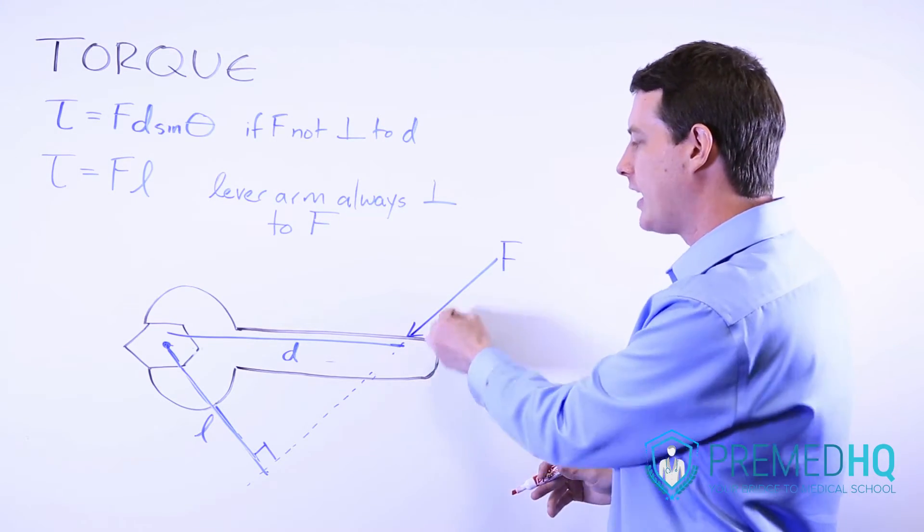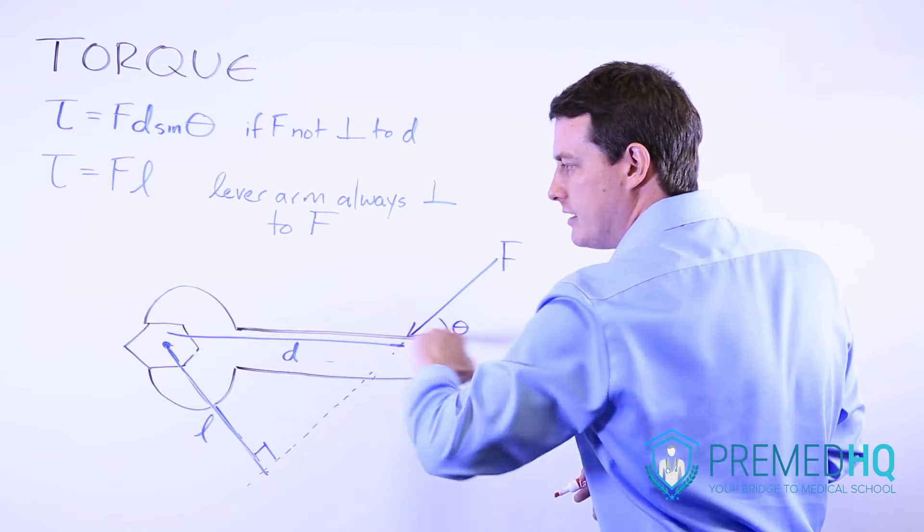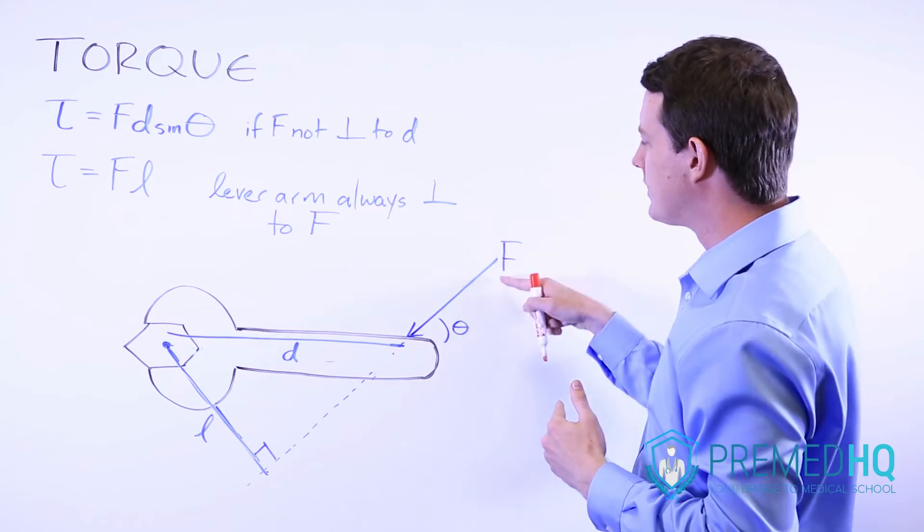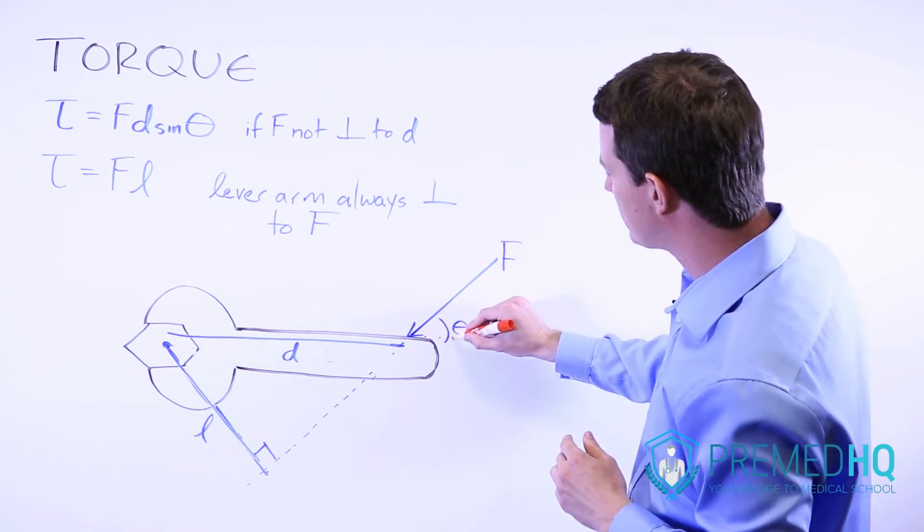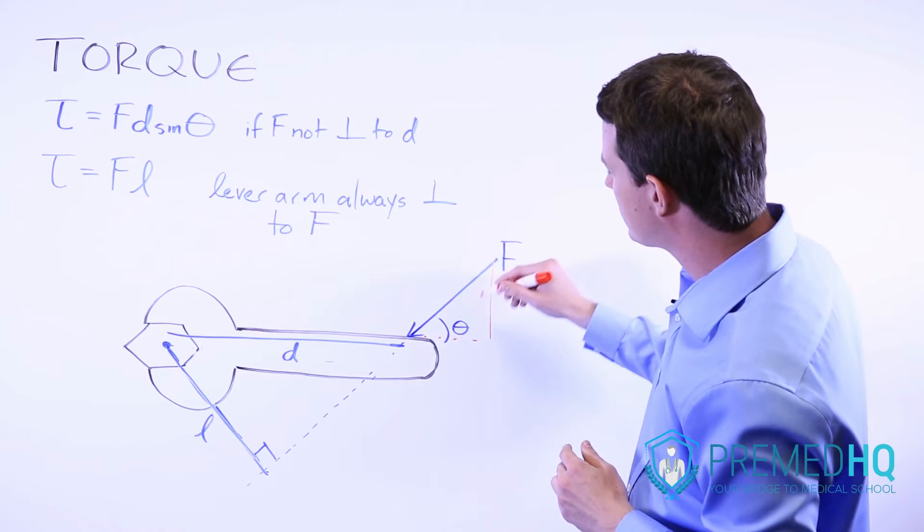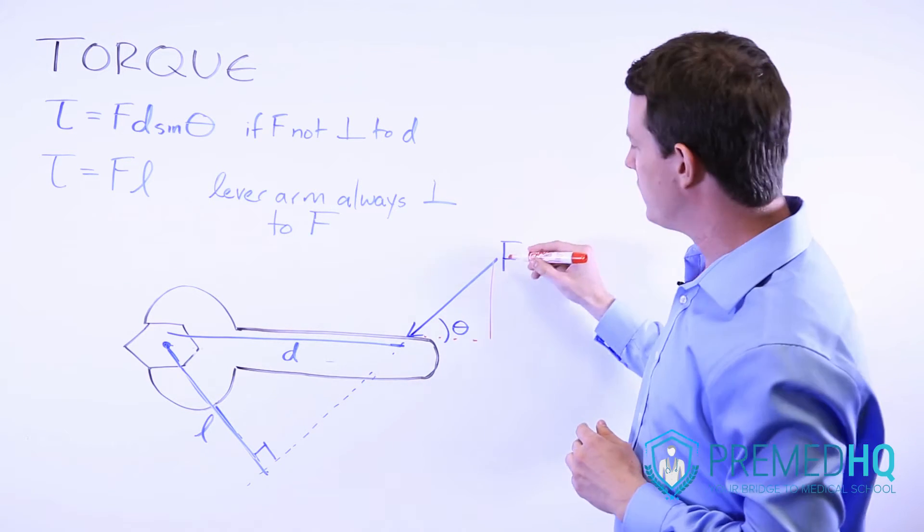In that case you're going to get an angle between the distance vector and the force vector, and the sine, because remember that this is a right triangle, the sine will tell you the opposite over the hypotenuse.